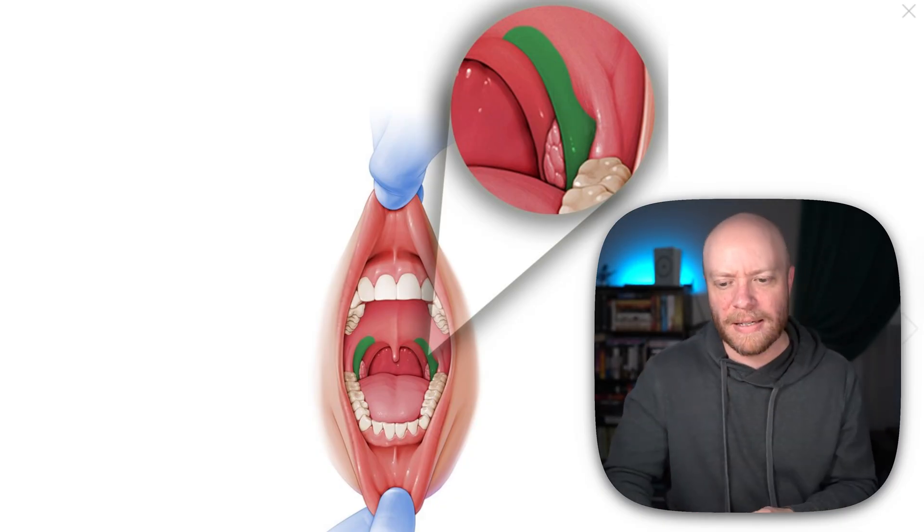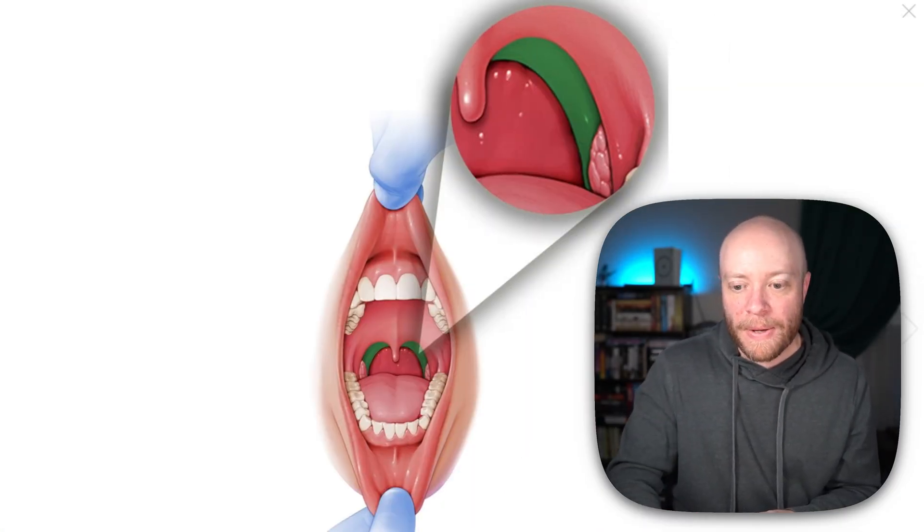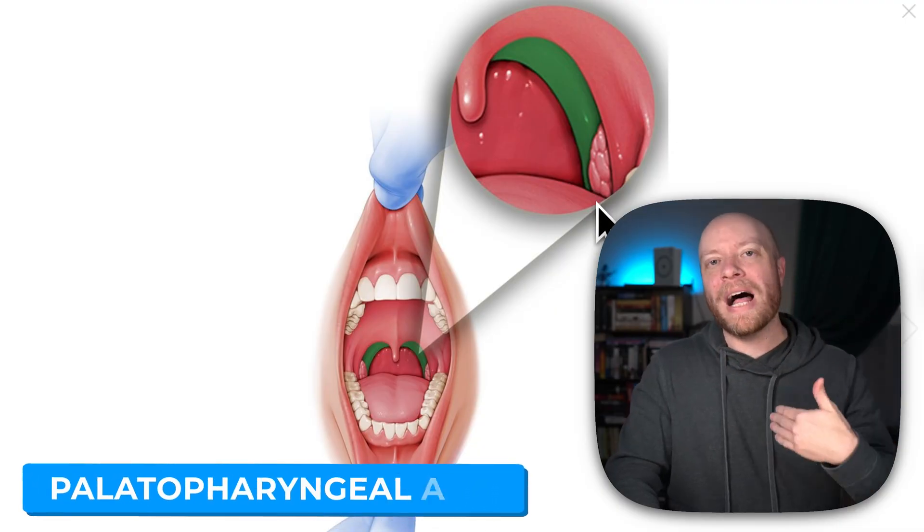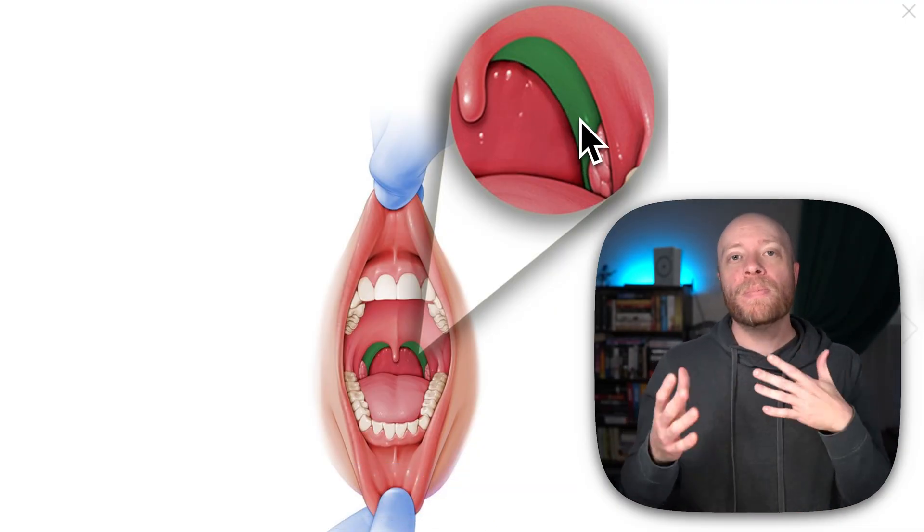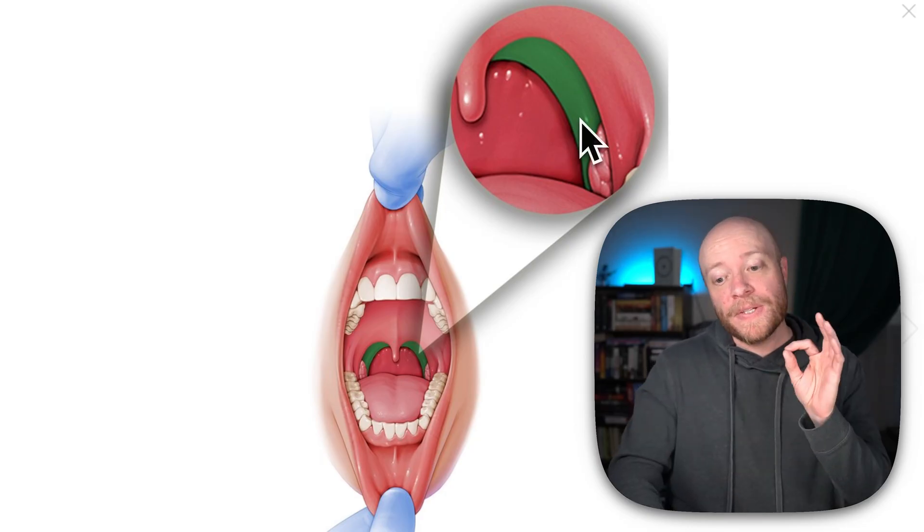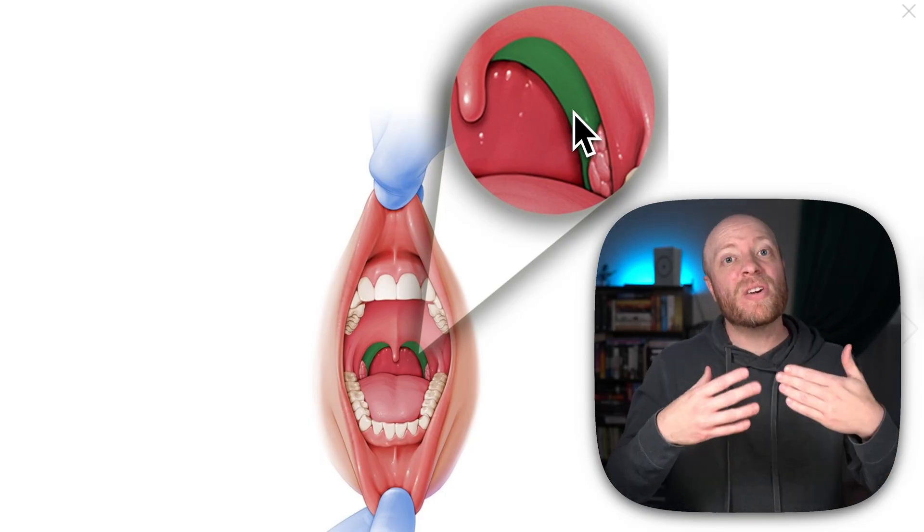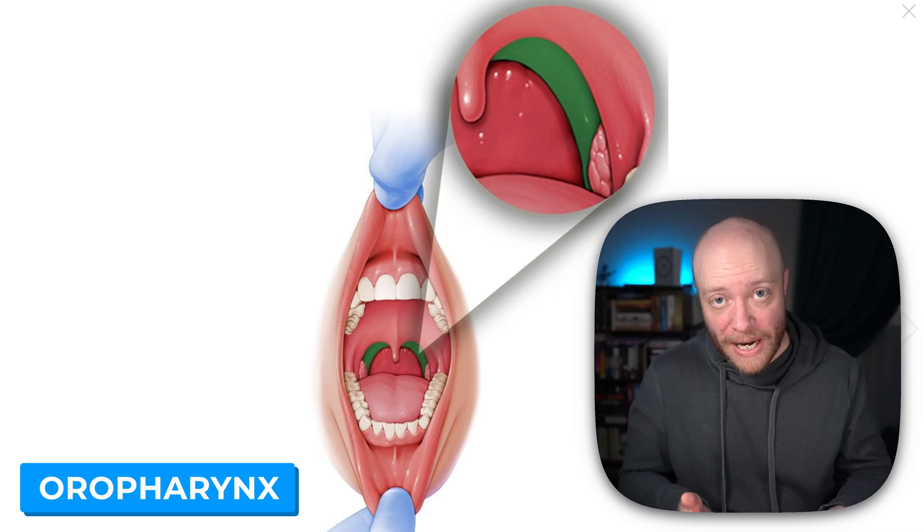Behind it is the palatopharyngeal arch, and the palatopharyngeal arch is also part of that isthmus of fauces. But this is where we can officially say we are now in the oropharynx.